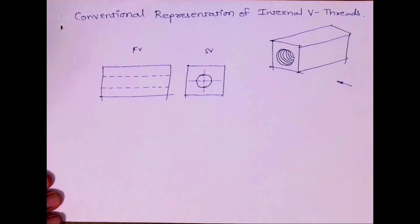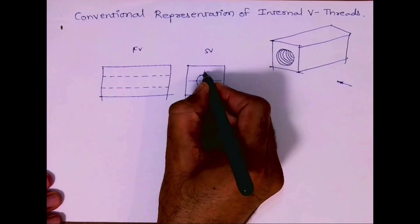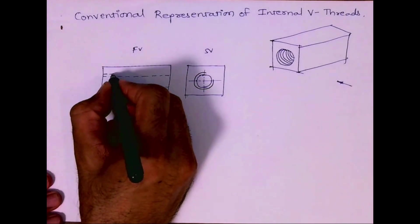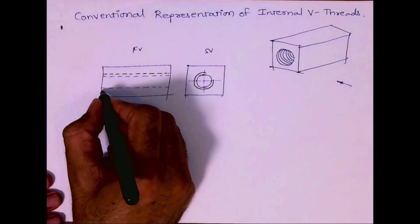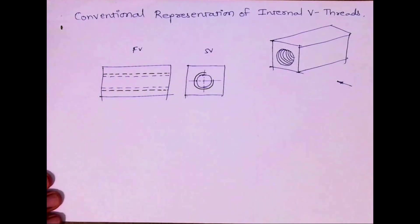Then this is a threading, internal threading, so we'll have one more circle but that will be three-fourths. So we'll have one more dotted line. This is how we generally draw conventional representation of internal V thread in orthography.